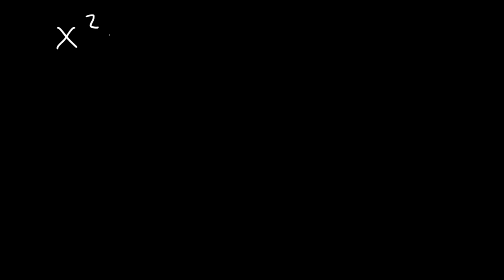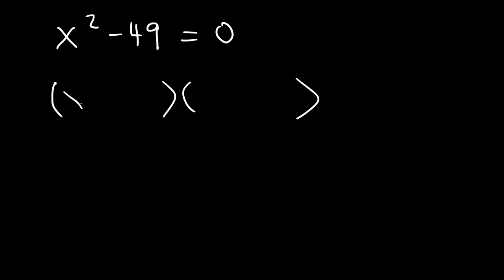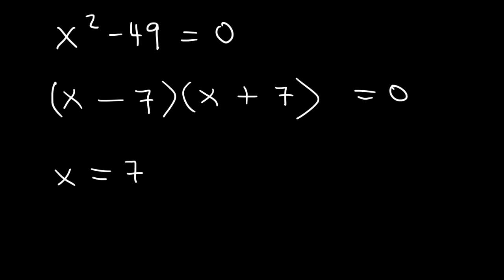Let me give you a similar example — try this one. x squared minus 49 is equal to zero. Feel free to pause the video; the best way to learn is by doing these examples. To factor it, it's going to be x and x, and the square root of 49 is 7. So we have x minus 7 and x plus 7, giving two answers: positive 7 and negative 7.